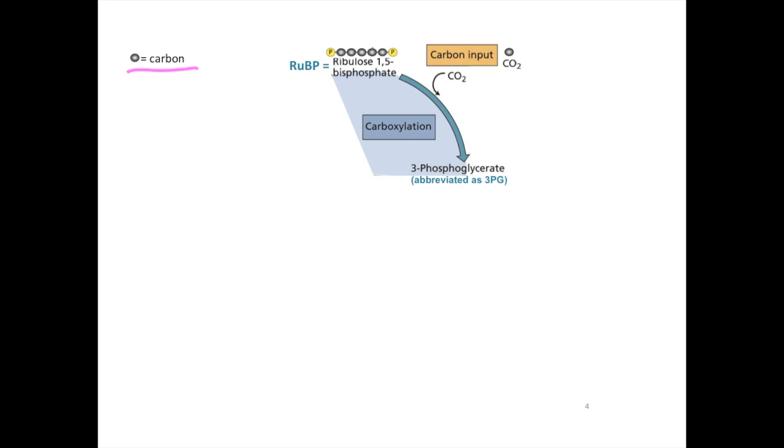So we need one RuBP to act as an acceptor and to merge with CO2 molecules. And these CO2 molecules have actually diffused in from the atmosphere. In order for this merger to happen with RuBP and CO2, we need an enzyme to catalyze this reaction. So in comes rubisco, our enzyme to the rescue. After rubisco catalyzes the reaction of RuBP merging with a CO2 molecule, we end up with a six-carbon molecule. This is actually quite unstable, and it immediately splits in half.